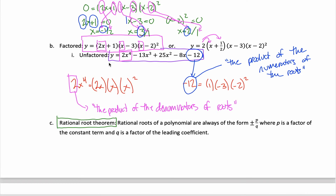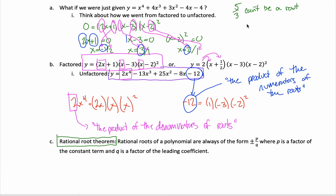Essentially, the rational root theorem tells you this: if someone said one of the roots of this polynomial is 5 thirds, you could say no — there's no way 5 thirds is a root. If it were, then 3x minus 5 would have to be a factor. But if 3x minus 5 were a factor, the leading coefficient would need to be a multiple of 3 and the constant term a multiple of 5. Since they're not, 3x minus 5 can't be a factor, so 5 thirds can't be a root.